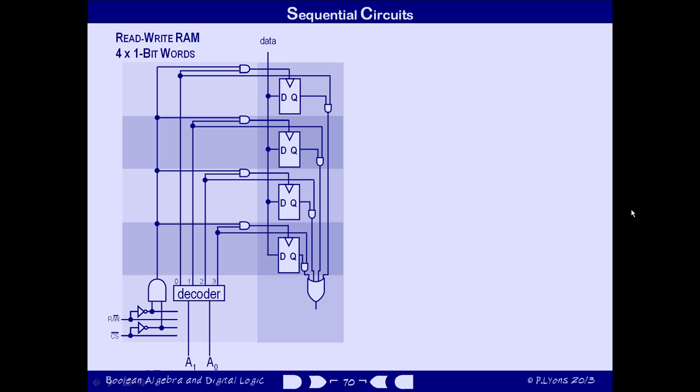So if we then feed the outputs from those AND gates through an OR gate, it will produce a 1 output only if the addressed flip-flop contains a 1, and a 0 output if the addressed flip-flop contains a 0.